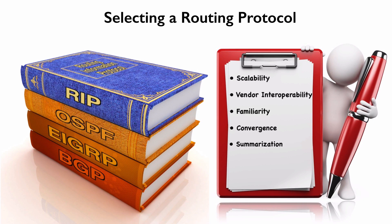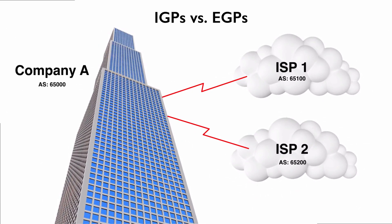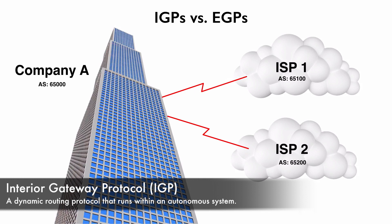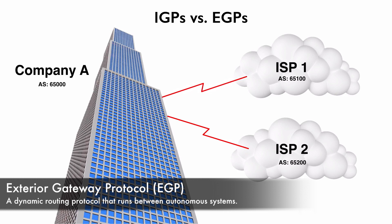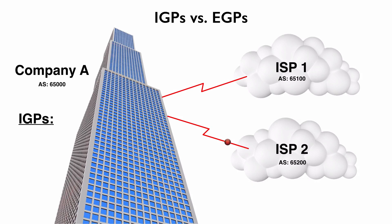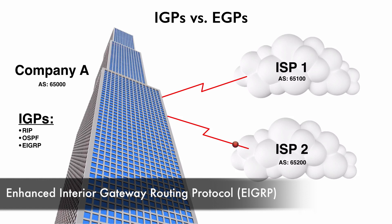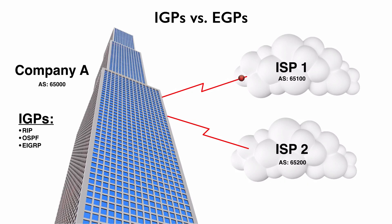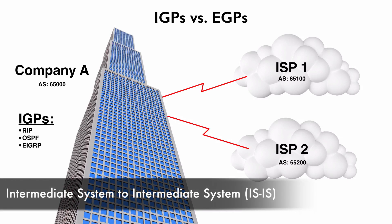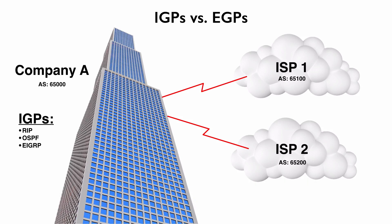We should also know whether the routing protocol needs to be an interior or exterior gateway protocol — an IGP or an EGP. An IGP is an interior gateway protocol, running within an autonomous system. An EGP is an exterior gateway protocol, running between autonomous systems. Within a company's single autonomous system, we'd select from an IGP — that might be RIP, OSPF, EIGRP, or also ISIS (Intermediate System to Intermediate System), which these are what we typically find running within an autonomous system.